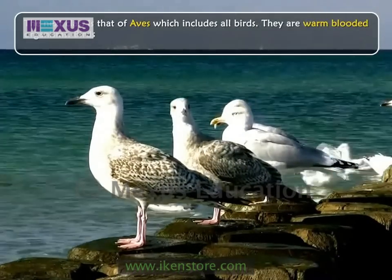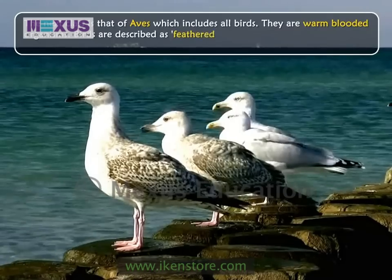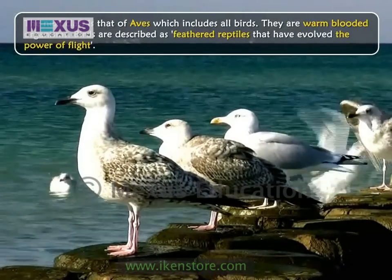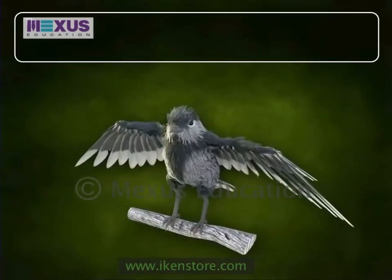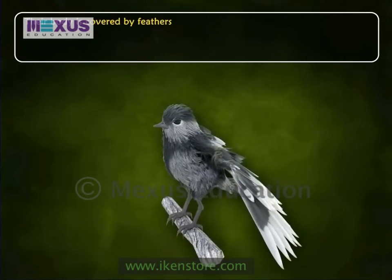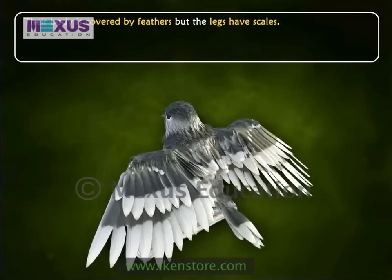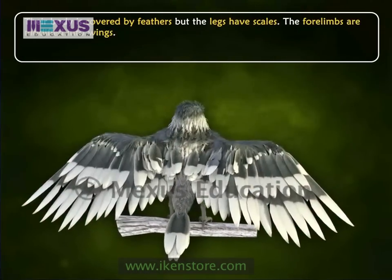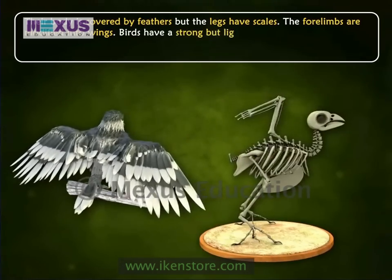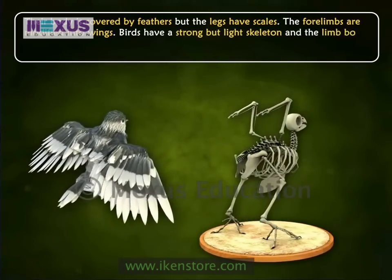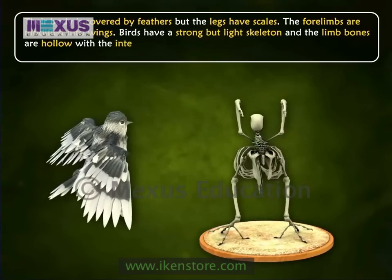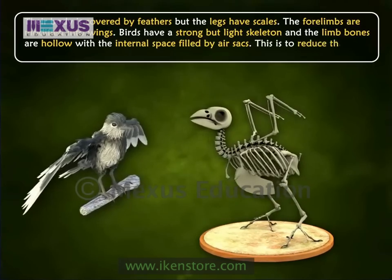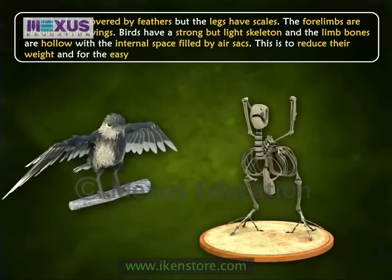The next class is Aves, which includes all birds. They are warm-blooded organisms described as feathered reptiles that have evolved the power of flight. Their body is covered by feathers but the legs have scales. The forelimbs are modified into wings. Birds have a strong but light skeleton, and the limb bones are hollow with the internal space filled by air sacs to reduce weight and aid easy flight.